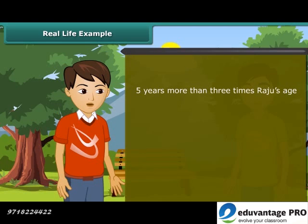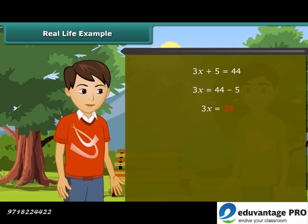Now, 5 years more than 3 times Raju's age is 3x plus 5, which equals 44. Now we will solve this equation. Transposing 5 to right hand side, we get 3x equals 39. Transposing 3 to right hand side, we get x as 13. Hence, Raju's age is 13 years.